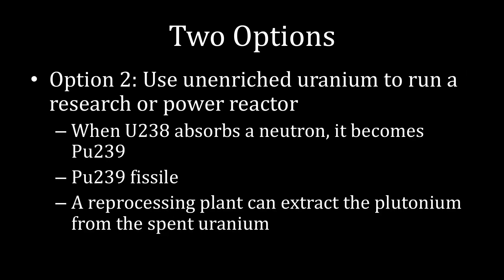The second option still requires obtaining uranium, but what you do after that is very different. Rather than enriching uranium, you take unenriched uranium and run it through particular types of research reactors or power reactors. When uranium-238, the very common isotope, absorbs a neutron, it turns into plutonium-239 — that other element we described. Like uranium-235, plutonium-239 is a fissile isotope. You can take the spent uranium that comes out of the reactor and run it through a reprocessing plant, which will extract the plutonium-239, giving you a fissile material.